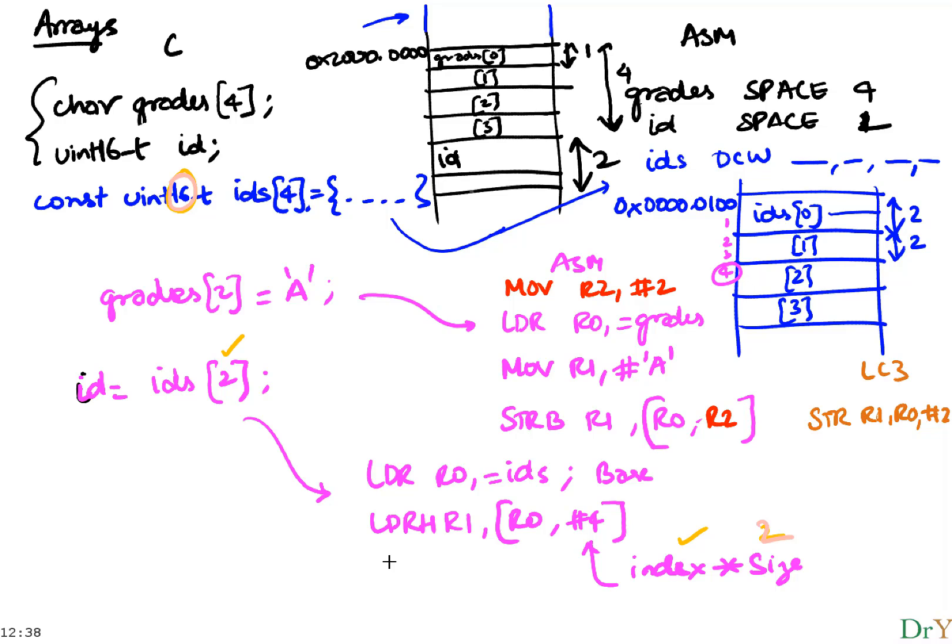And then I'm going to store this into id. I still haven't put it into id. How do I put it there? I'm going to do an LDR, R0 equals id this time, and I'm going to store R1 into R0. So, first I have to get what's on the right side, and then I have to store it into this id that's on the left. So, four instructions to do that assignment statement.